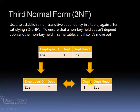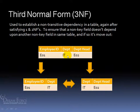Finally, the Third Normal Form is used to establish a non-transitive dependency in a table, after satisfying your First and Second Normal Forms in that order. What you want to do is ensure that a non-key field doesn't depend upon another non-key field in the same table, and if so, it's moved out. For example, we have a table with the department and the department head. The department head is totally dependent upon the department, because being a department head means nothing if you don't know the department. So we break it down and say the employee ID is assigned to a department — employees 1, 2, 3, 4 and their departments — and then in another table, who is the head of those departments, listing the departments as the primary key and then the department heads.